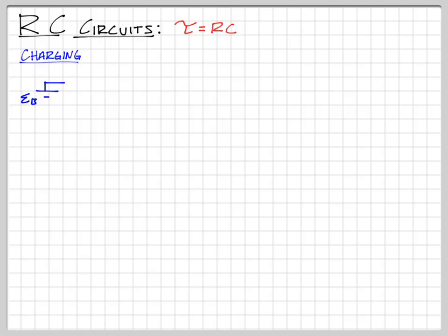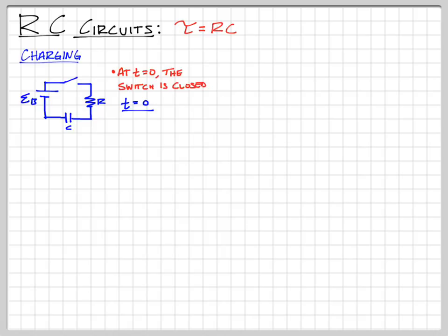For a charging circuit, we have a battery attached to a resistor attached to a capacitor — RC. As soon as we throw the switch at time equals zero, current is going to begin to flow. When time equals zero, I have full current, because my capacitor is not charged — there's no voltage and no charge on the capacitor. So my current is going to be the EMF of the battery divided by the resistance, and the charge on the capacitor is zero.